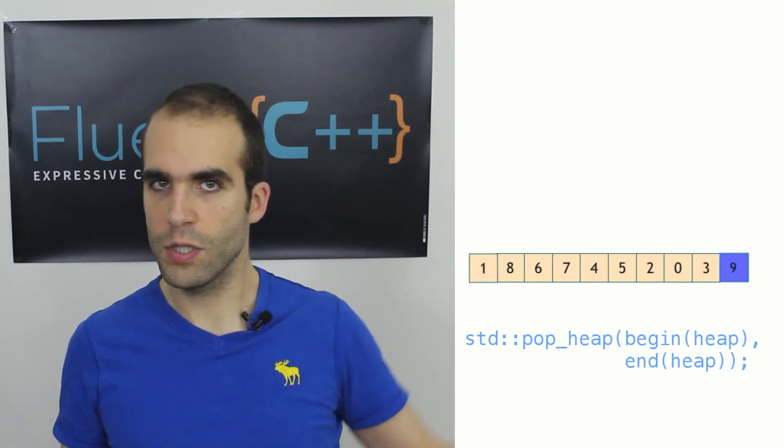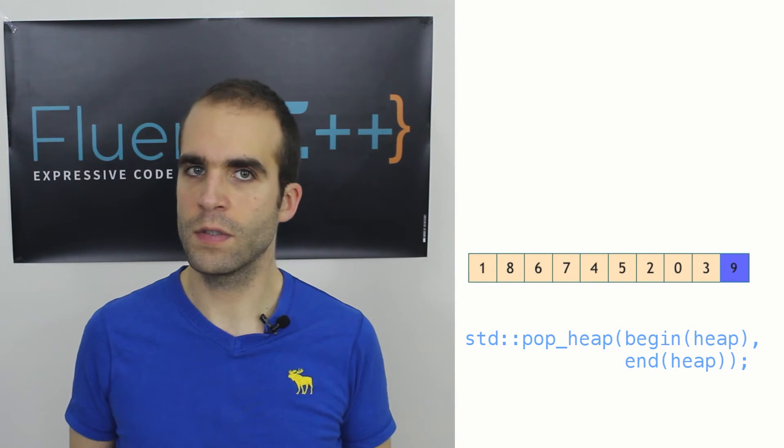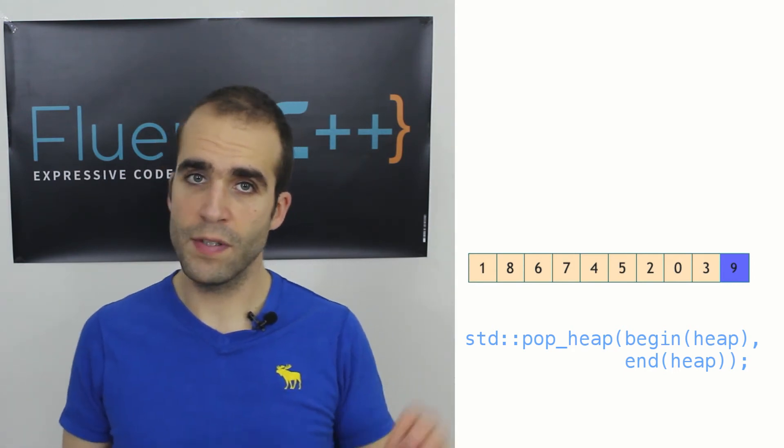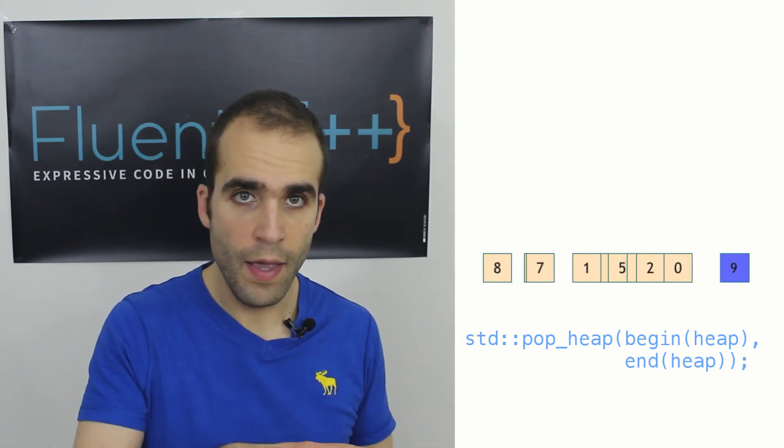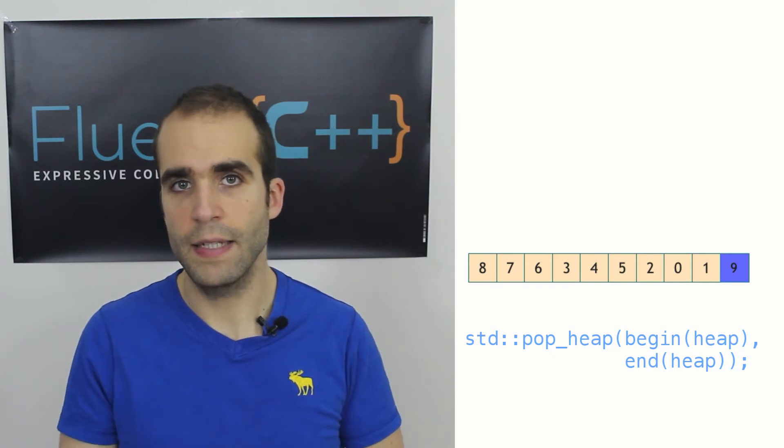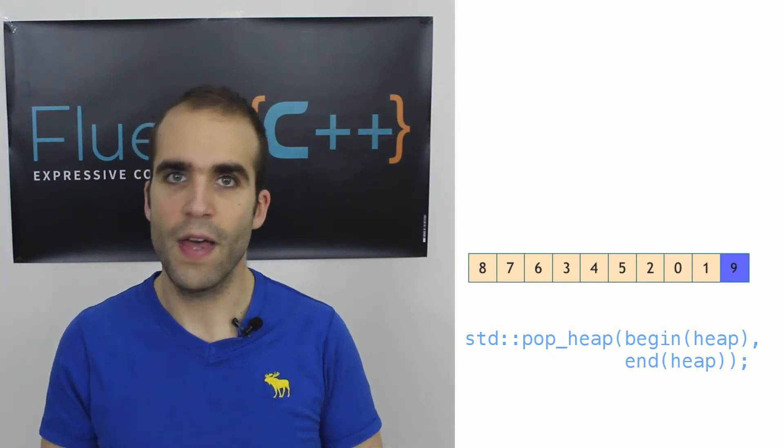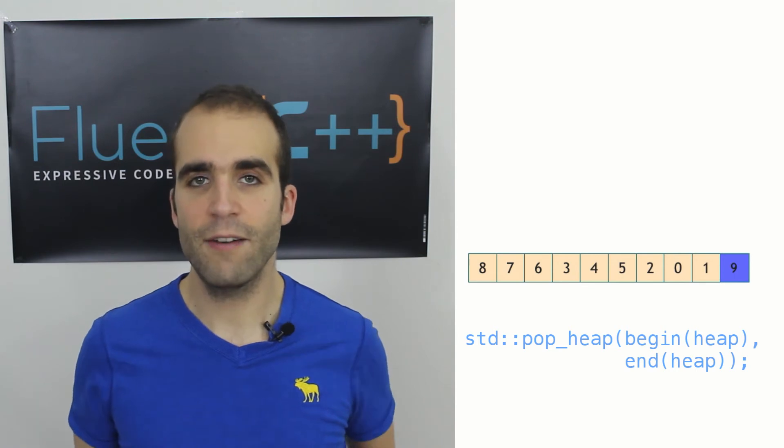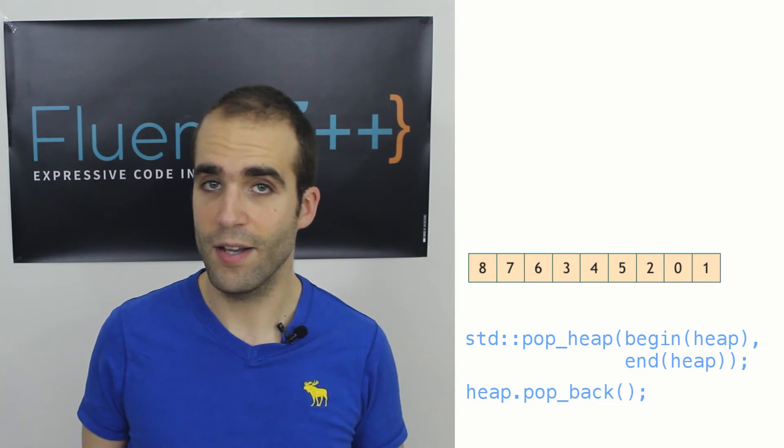Pop_heap starts by swapping out the first element that we want to get rid of with the last element, which is one of the smallest ones. And then it's going to make that small element, which is probably not at the right position on the top, bubble down its way to its final position by comparing it to its children. And every time it's smaller than one of its children, we're going to swap it out with its maximum child to make sure that we keep the heap property. And to actually get rid of that element that used to be the top of the heap, we're going to do a pop_back on the vector.